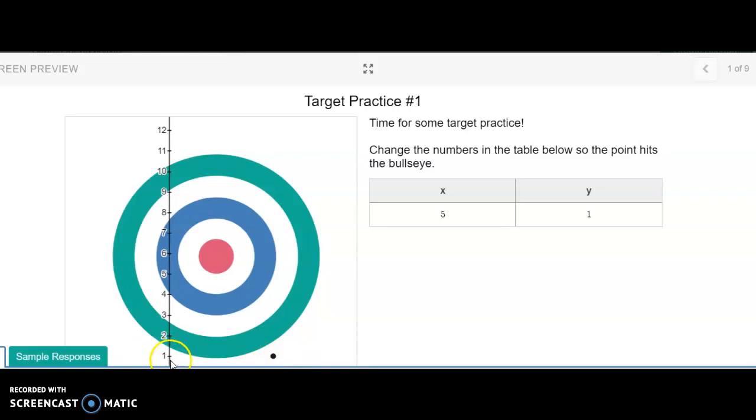And the y value is at one. Okay, so we need to move it more to the left, so I can change this x value to zero. That doesn't work. We need to get it on the bullseye, which is this red. About there, maybe we can try one. No, let's do two. Awesome!